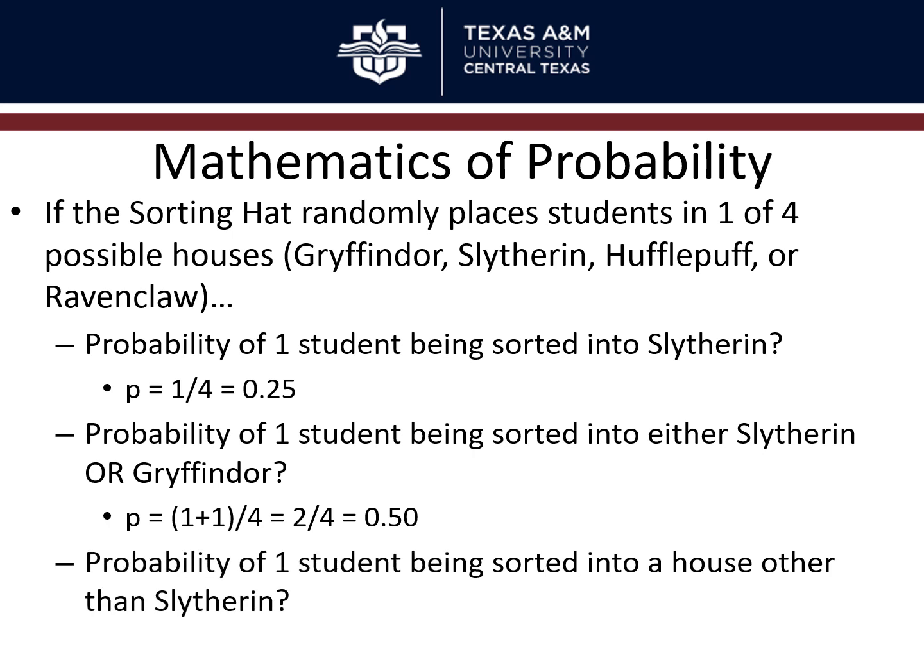What about the probability of a student being sorted into a house other than Slytherin? Well, that leaves you with three other houses, so three goes in the numerator — three out of four, which is 0.75, or 75% chance. That's the basic mathematics of probability.